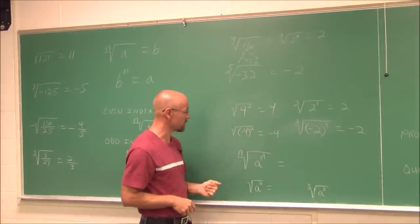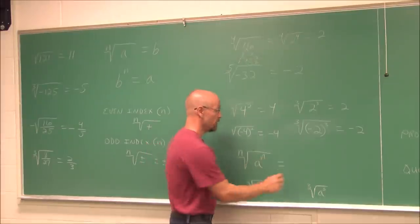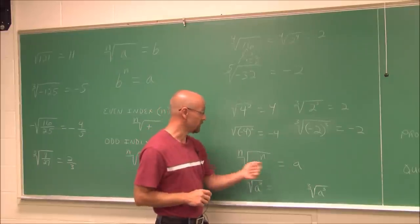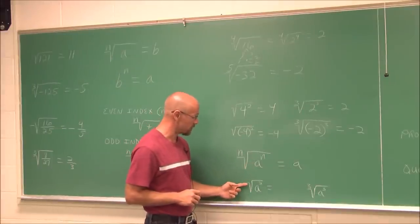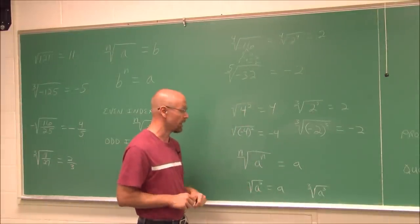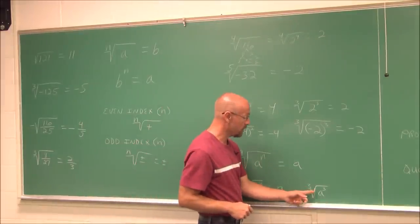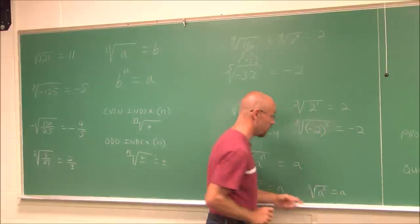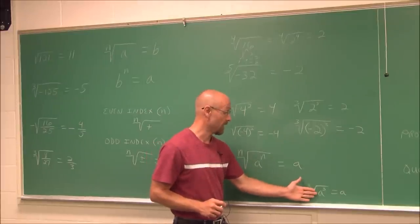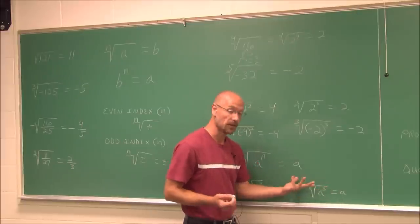So essentially, if we have the nth root of something to the nth power, it gives back that base value. The square root of a squared is just a — a can be positive or negative because the powers reduce to 1. The cube root of a cubed is just a, because we're asking what value cubed equals a cubed, and the answer is a.